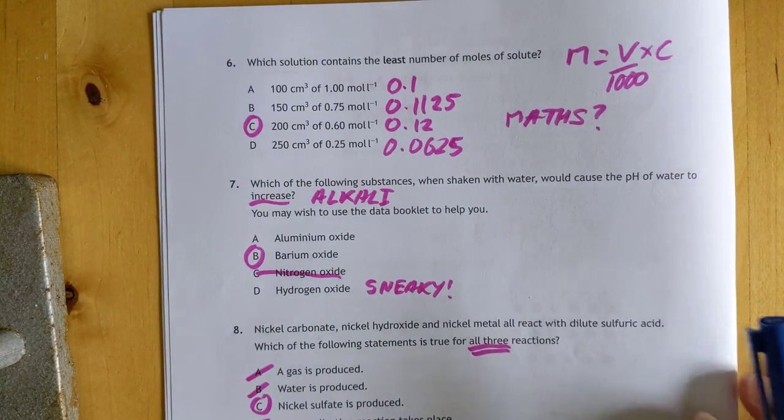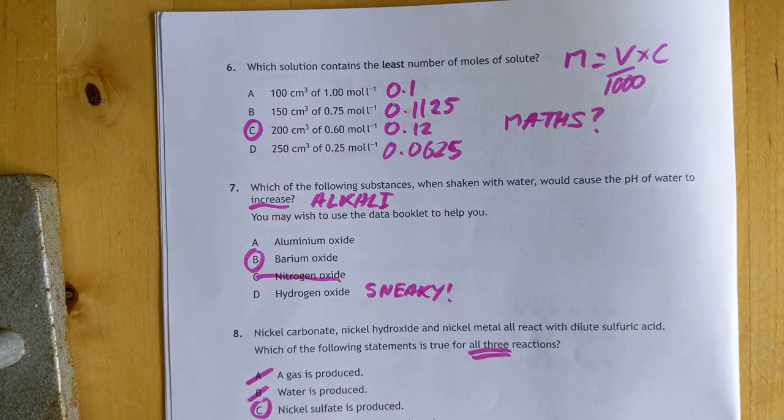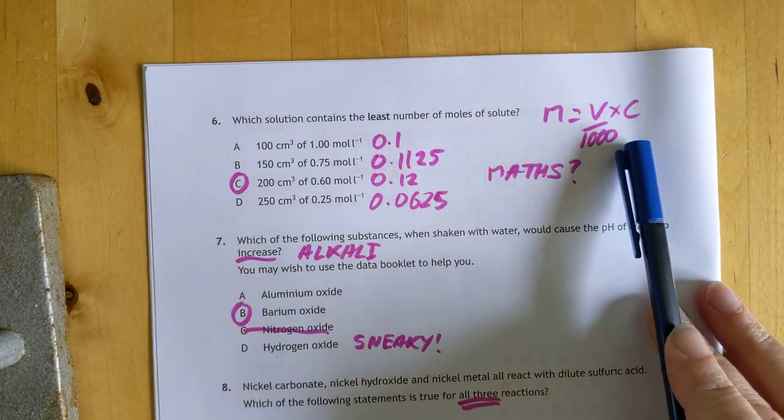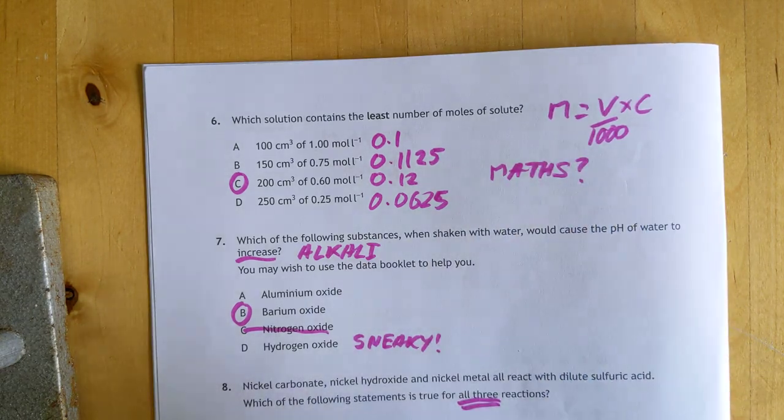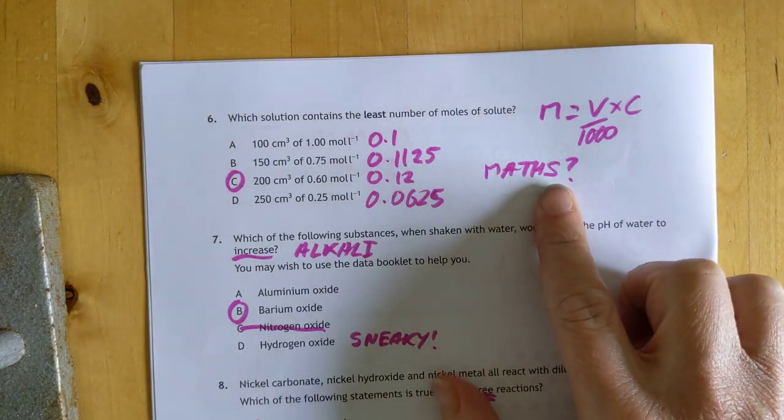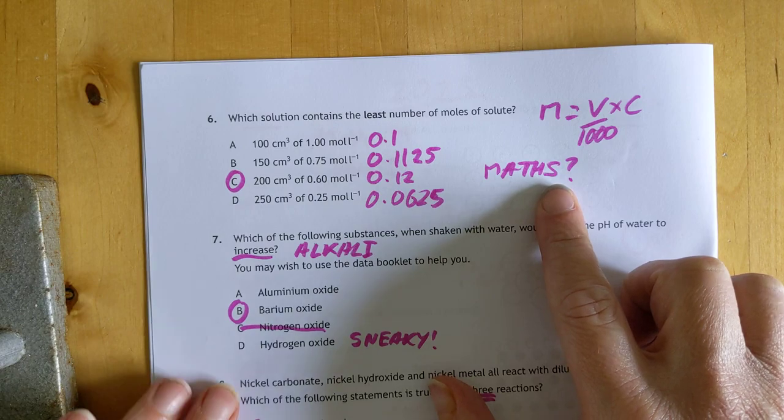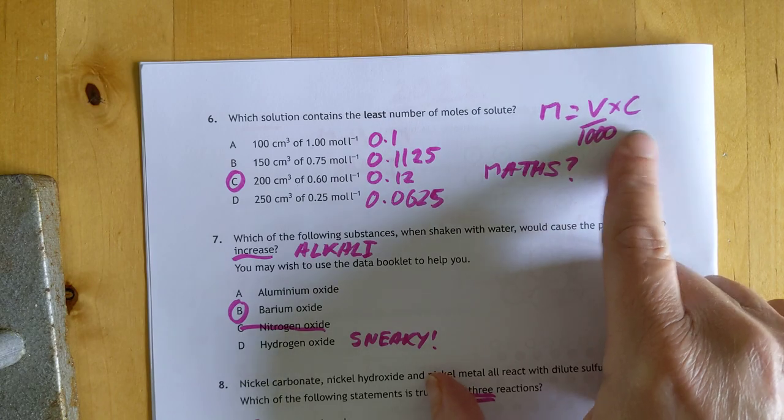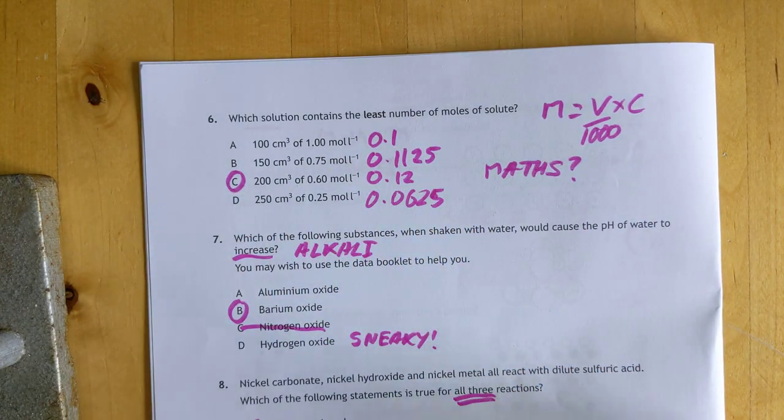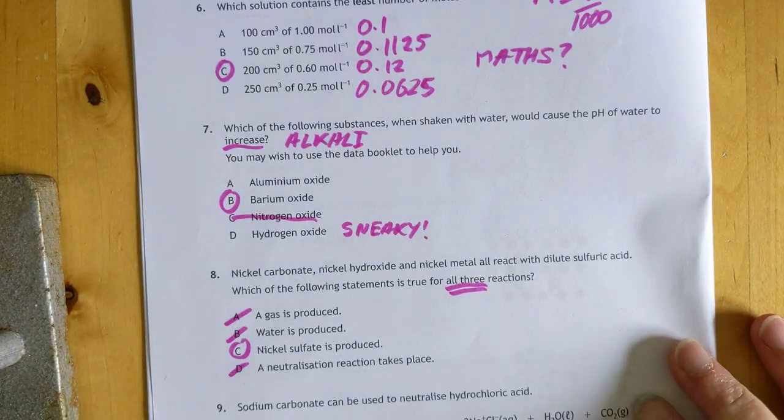Number six: least moles of solute. You've got to just work these out. There's no shortcut that I could see. It was donkey work time, more of a maths question than a chemistry question. You have to take the volume, divide it by 1000, and multiply by the concentration. The answer is C.